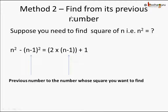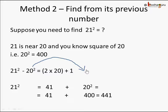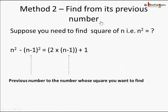To put it generically: given a number n, to find its square using its previous number, write n squared minus (n minus 1) squared equals 2 times the previous number plus 1. In case of 21, the previous number was 20. Move the previous number's square to the right side and it becomes plus. So 2 times 20 plus 1 equals 41, plus 20 squared (400) equals 441. The same approach works for 31, 41, 101, and so on.